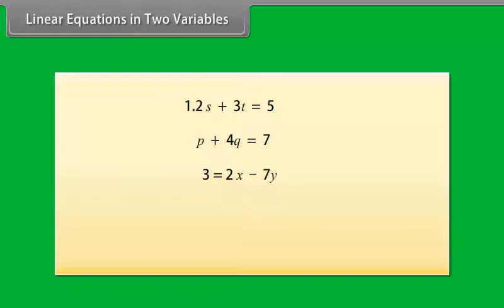We can put these equations in the form: 1.2S plus 3T minus 5 is equal to 0, P plus 4Q minus 7 is 0, and 2X minus 7Y minus 3 is 0 respectively.